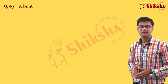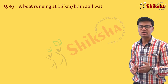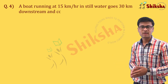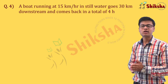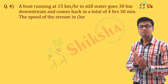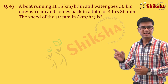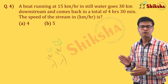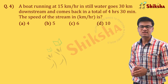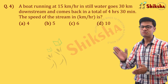A boat running at 15 km per hour in still water goes 30 km downstream and comes back in a total of 4 hours 30 minutes. The speed of the stream in km per hour is: Option A 4, B 5, C 6, or D 10. Look at the solution.